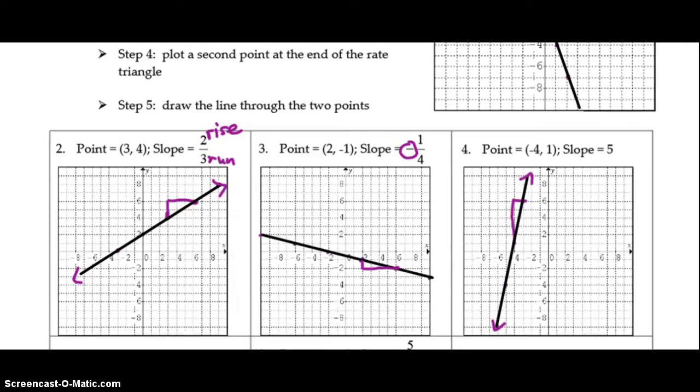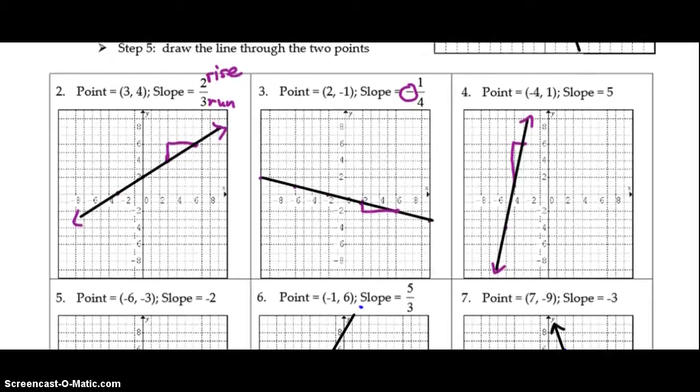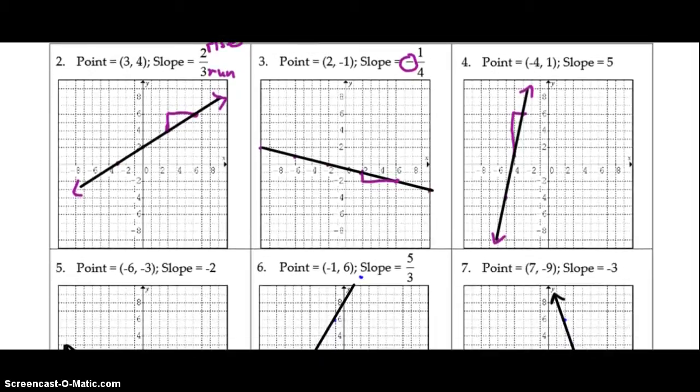Alright, welcome back. So, you'll notice example 3, make sure your line's going down from left to right, negative slope. Number 4, it's a positive, so your line's going upwards from left to right.